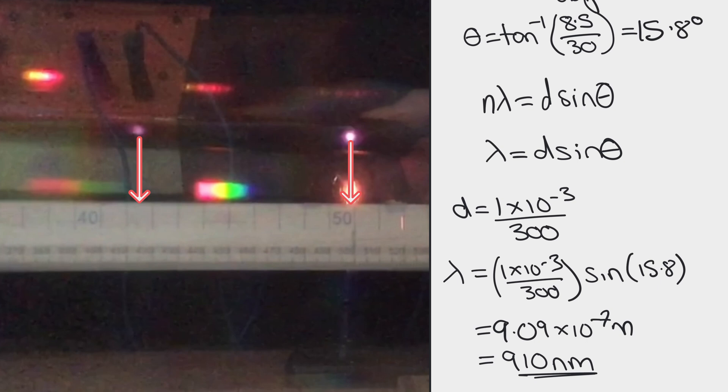And I checked the typical wavelengths for infrared remote controls are about 940 nanometers so I'm not too far away from that.